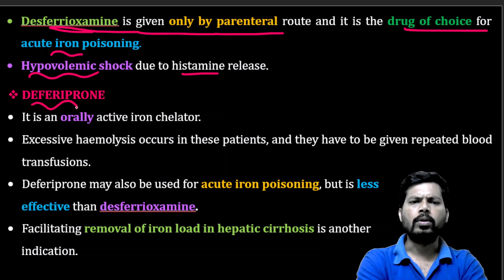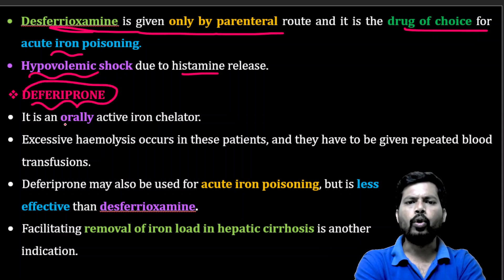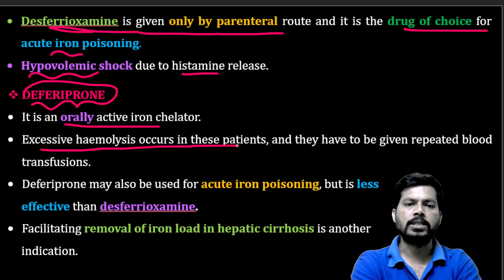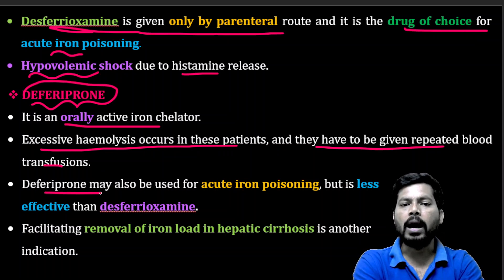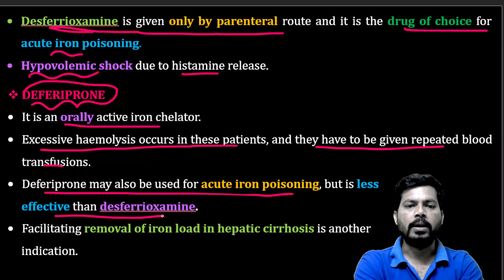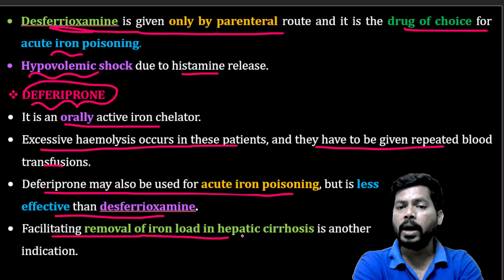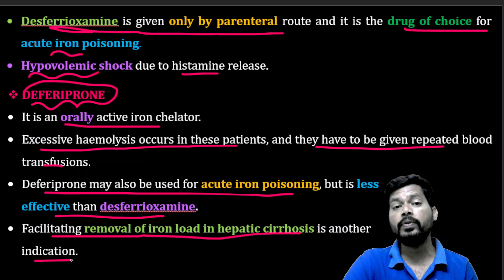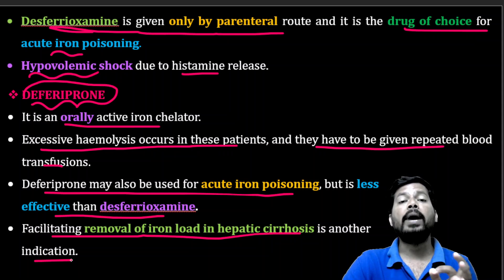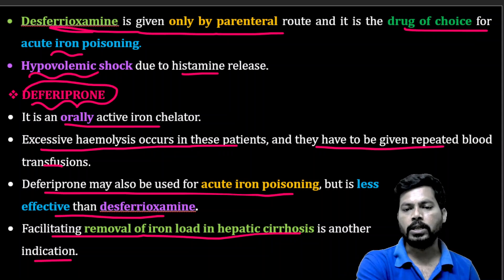Deferiprone is an orally active iron chelator. Excessive hemolysis occurs in patients who require repeated blood transfusions. Deferiprone may also be used for acute iron poisoning, but it is less effective compared to desferioxamine. It also facilitates removal of excess iron load from the liver in hepatic cirrhosis.